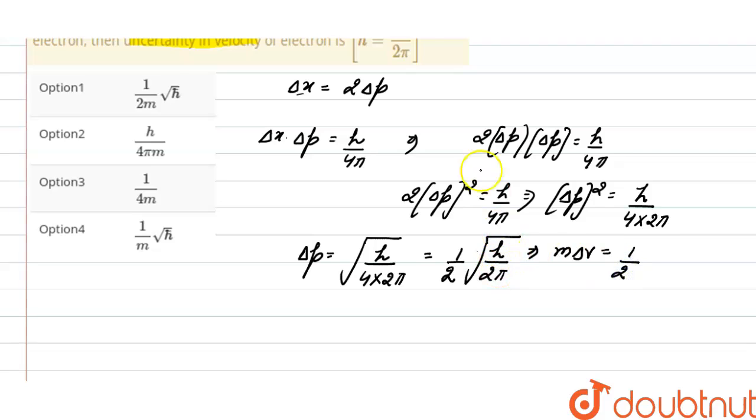And we can write h by 2 as h bar, so under root of h bar. And we can write this as uncertainty in velocity will be 1 divided by 2m under root of h bar, and the correct option